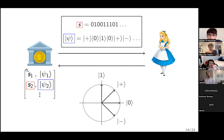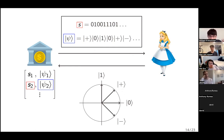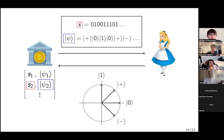To verify the authenticity of a banknote, Alice physically brings it back to the bank. The bank looks up the serial number in their table, and for each qubit, independently measures it in the basis it was prepared in — if the state was a |+⟩ or |−⟩, the bank measures in the |+⟩/|−⟩ basis; if it was supposed to be |0⟩ or |1⟩, they measure in the |0⟩/|1⟩ basis. They verify that the measurement outcomes agree with what they should be: if you originally prepared |+⟩, measuring in the |+⟩/|−⟩ basis should always give |+⟩; if you prepared |0⟩, measuring in the |0⟩/|1⟩ basis should always give |0⟩.